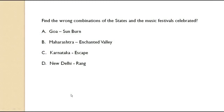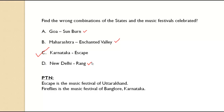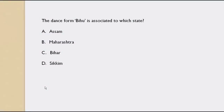Find the wrong combination of states and music festivals. Goa–Sunburn is correct. Maharashtra–Enchanted Valley is correct. Karnataka–Escape is wrong; Escape is the music festival of Uttarakhand. Karnataka's music festival is Fireflies. So if asked about Karnataka's music festival, the answer is Fireflies.